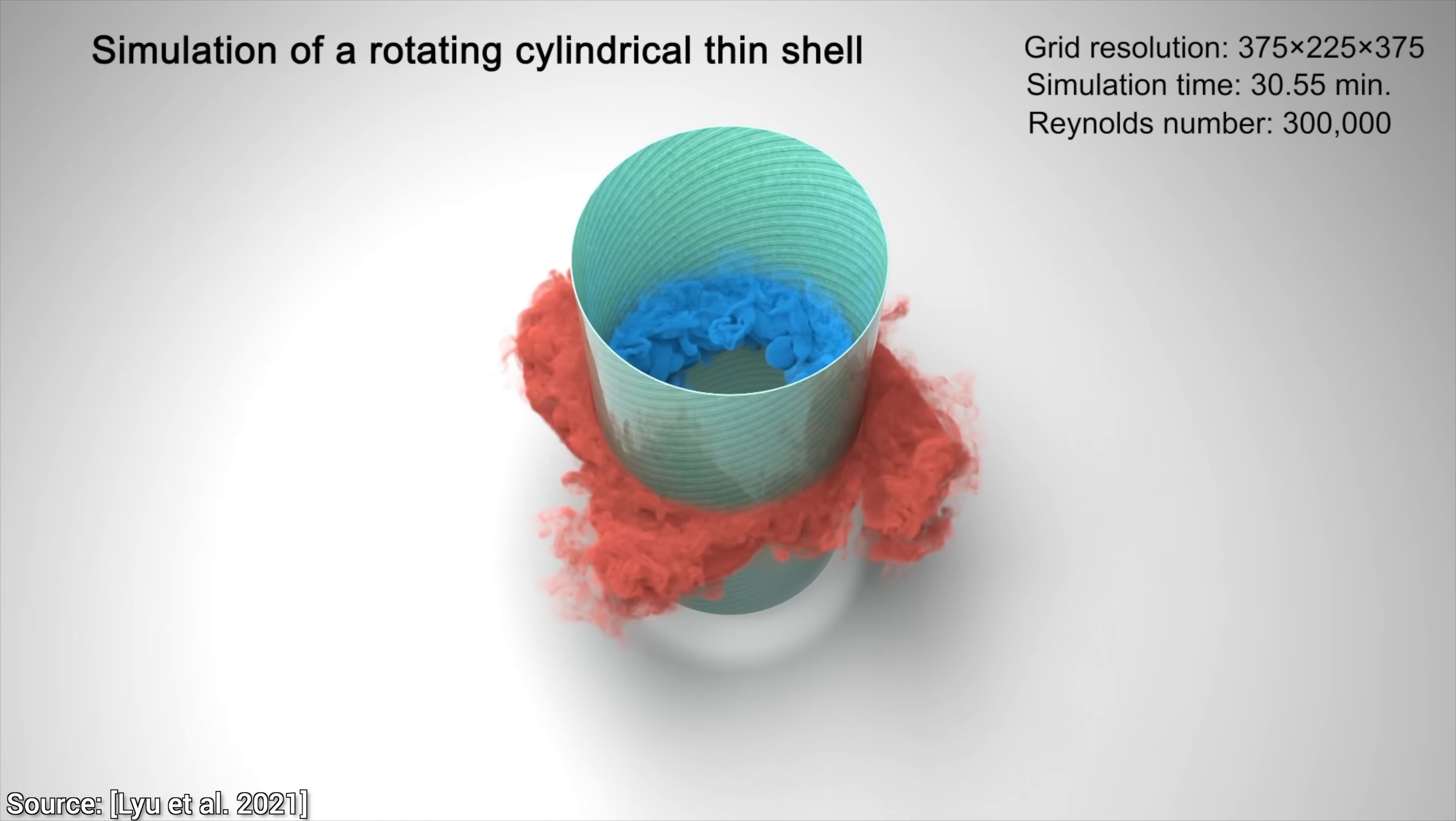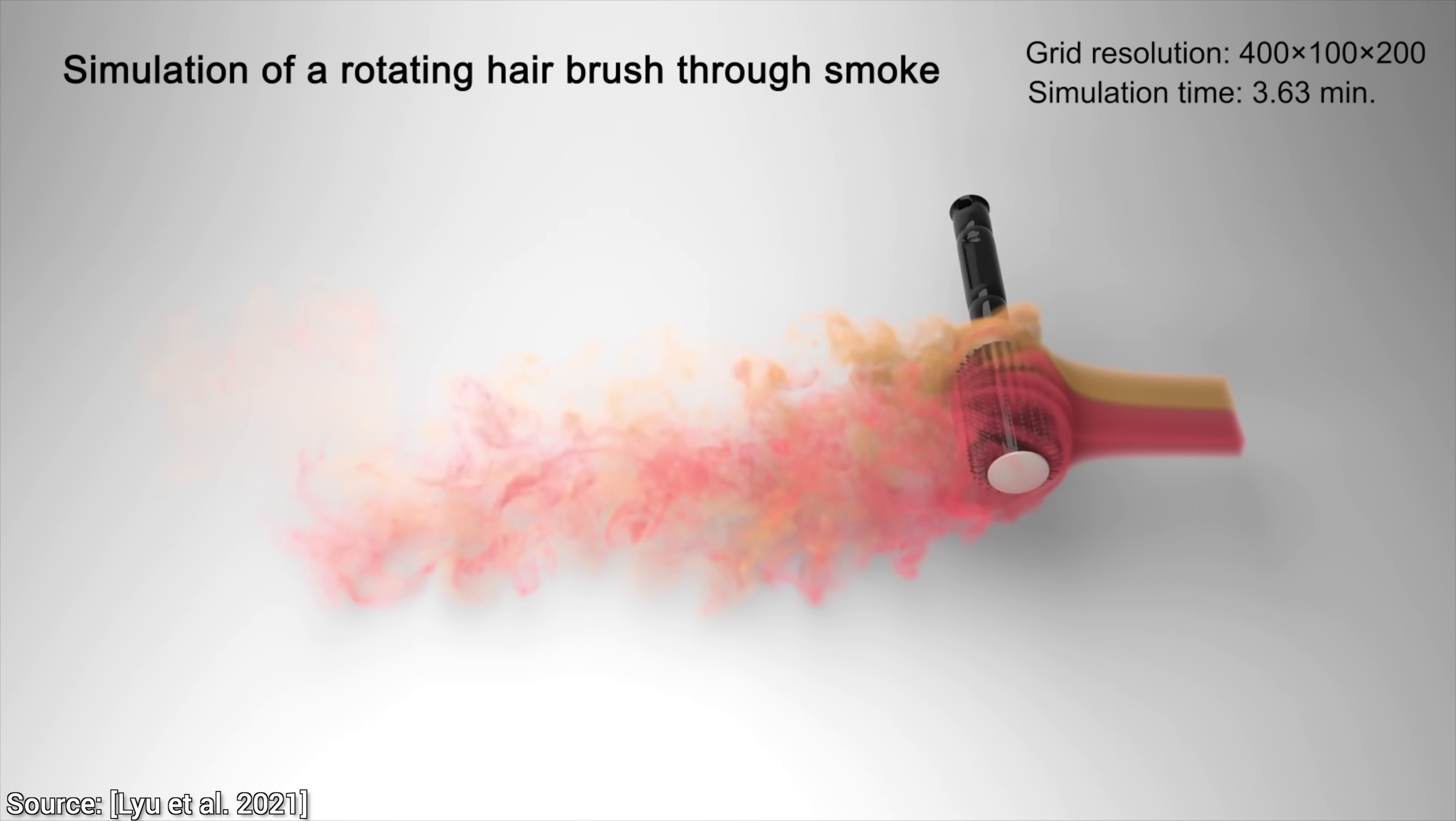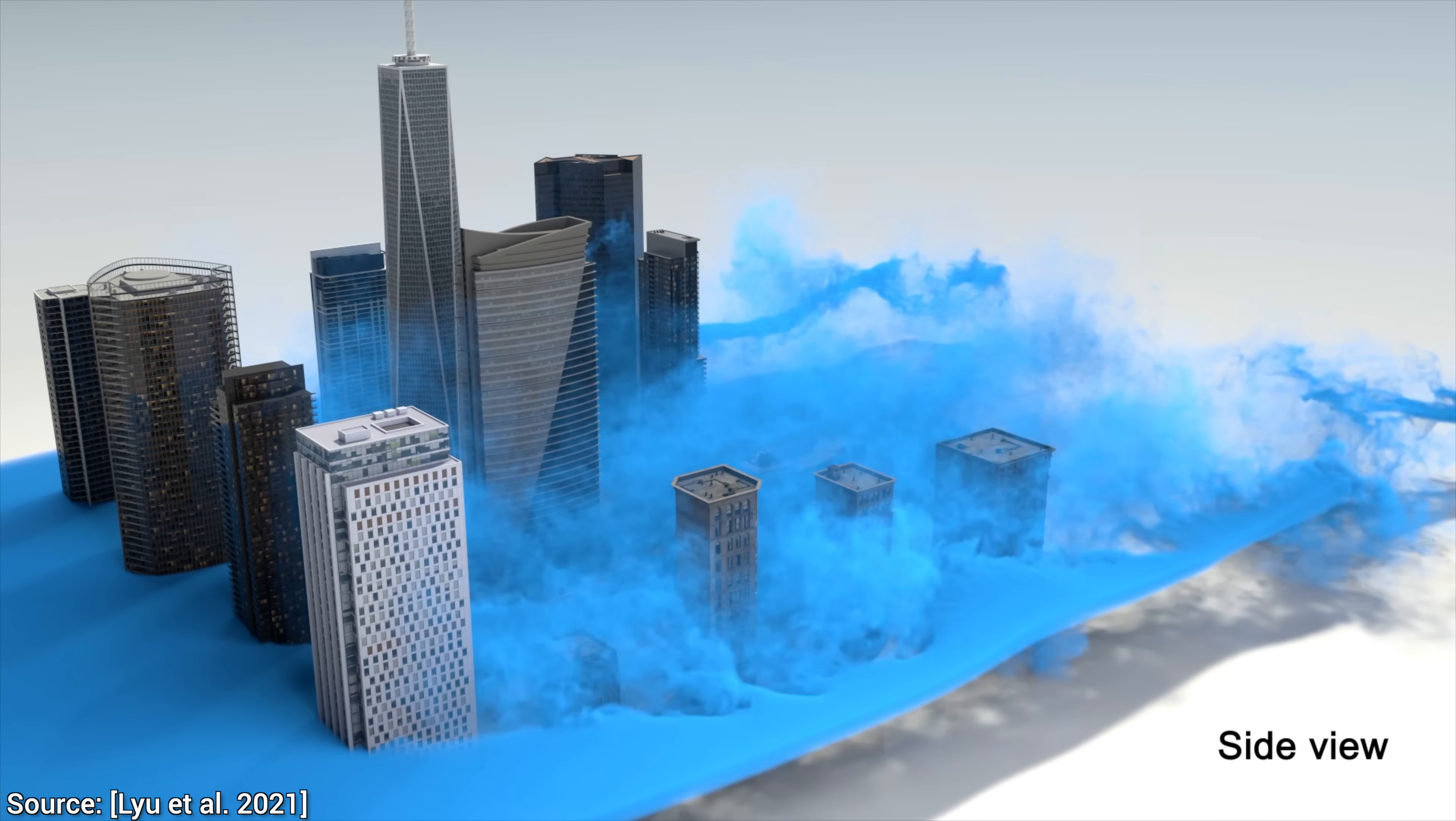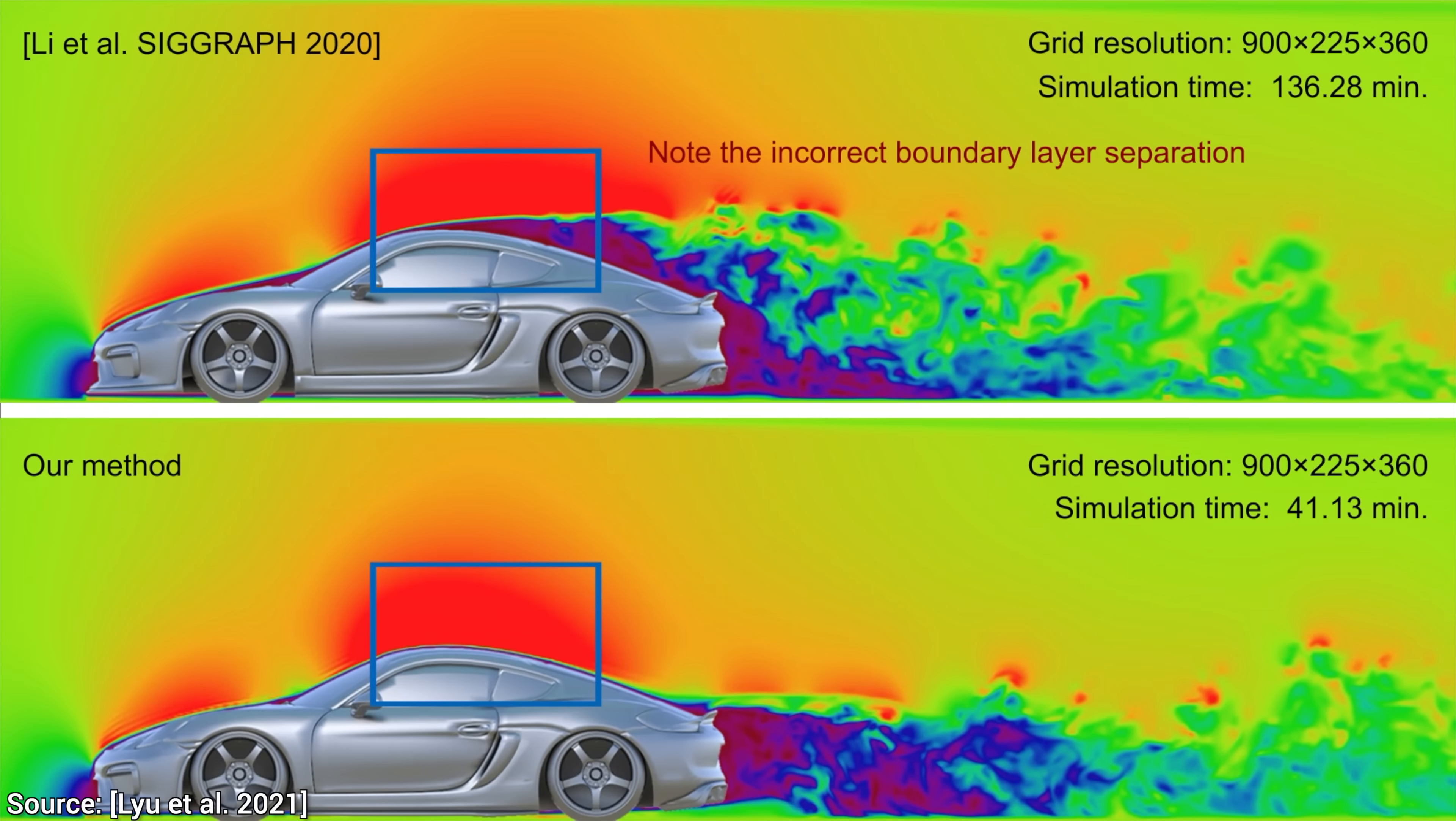Today, we are going to look at an incredible new paper where we are going to simulate flows around thin shells, rods, the wind blowing at leaves, airflow through a city, and get this, we will produce spiral vortices around an aircraft and even perform some wind tunnel simulations.